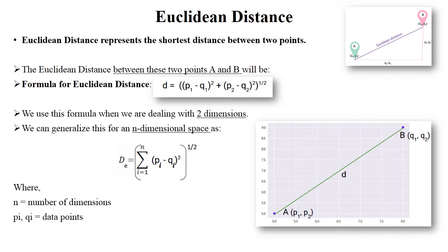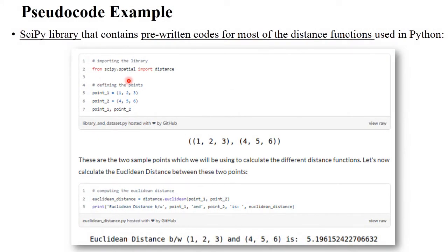Let's see the example. This is a pseudocode example of the Euclidean distance algorithm in Python. There are different libraries available — all the algorithm models are built in to those particular libraries. For Euclidean distance or any distance model, you should import the scipy library. From scipy, import the distance class, which we will use as an object in your code.